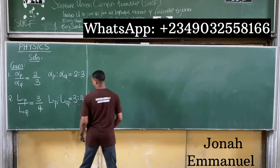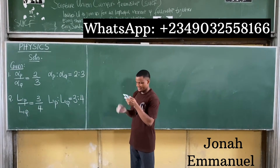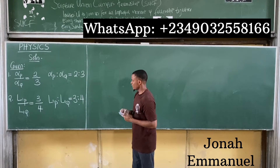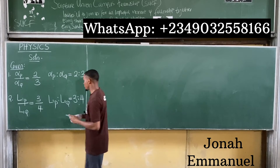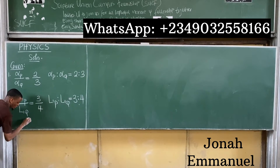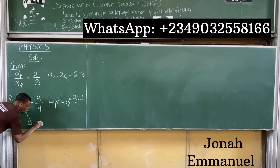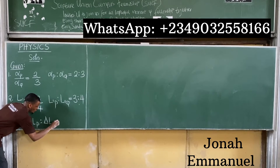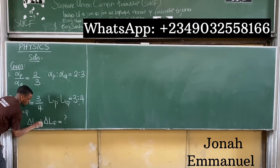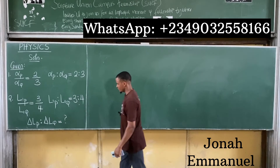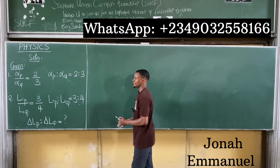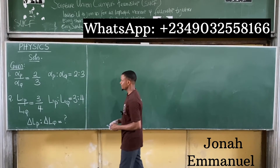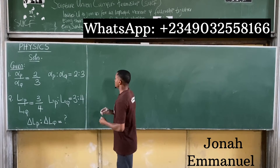So that confirms our given values: alpha_P to alpha_Q is 2:3, and length of P to length of Q is 3:4. They ask for the ratio of the increase in length — that is, the change in length of P to the change in length of Q. Let's recall the formula to get that.